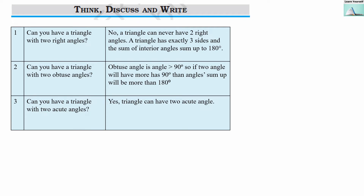All three questions are based on the angle sum property of the triangle. What is the angle sum property of a triangle? All three angles of a triangle will add up to 180 degrees. When we add the measures of all three angles of the triangle, it should be exactly 180 degrees — not more than or less than 180 degrees. Based on this property, we are going to answer all these questions.